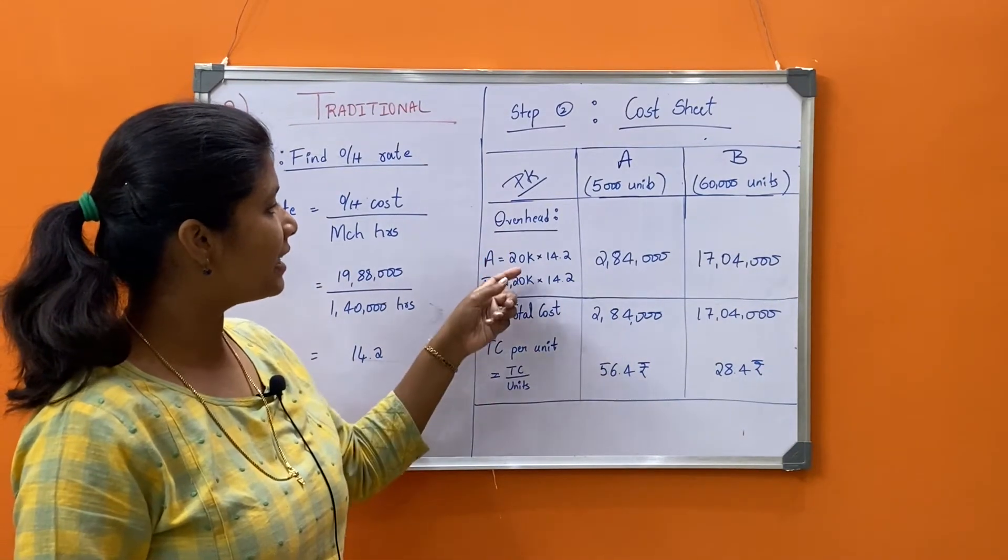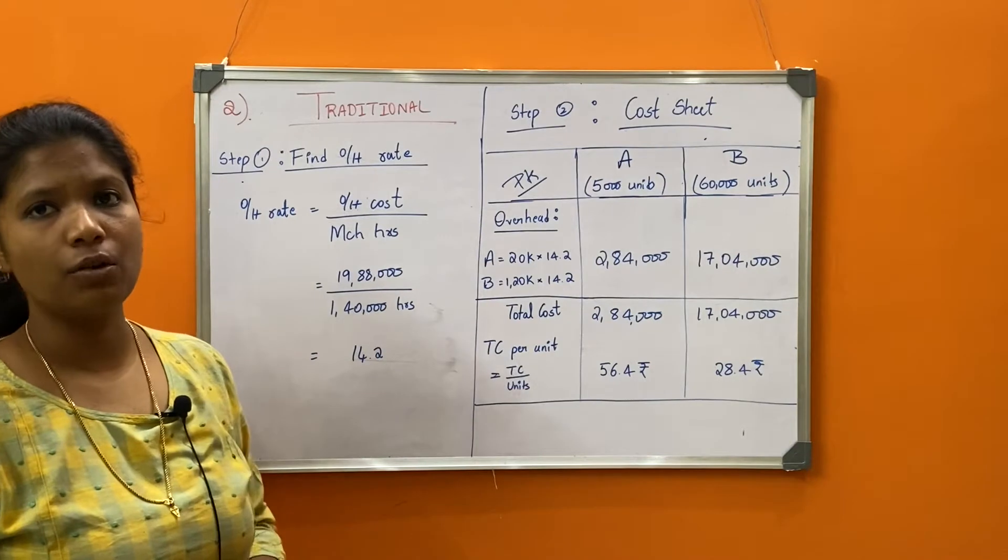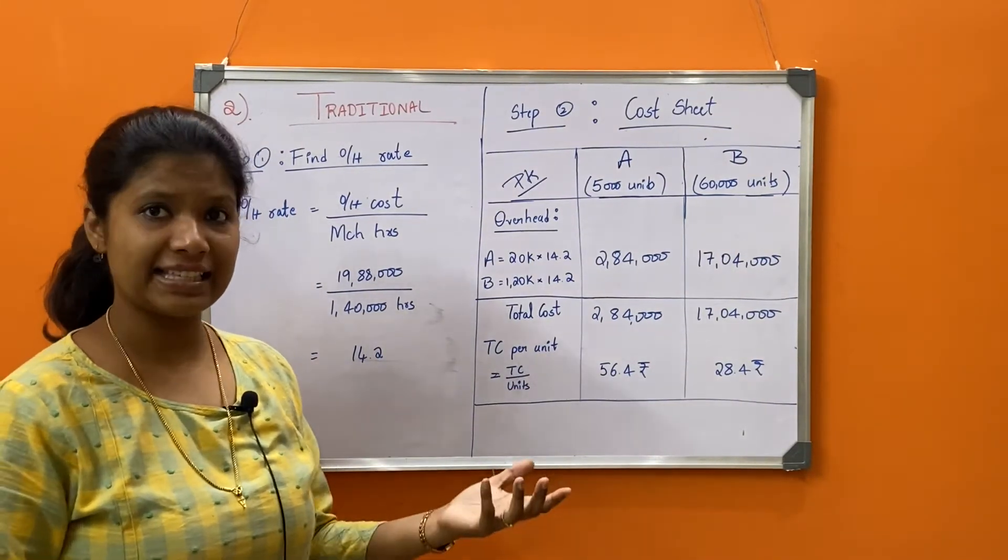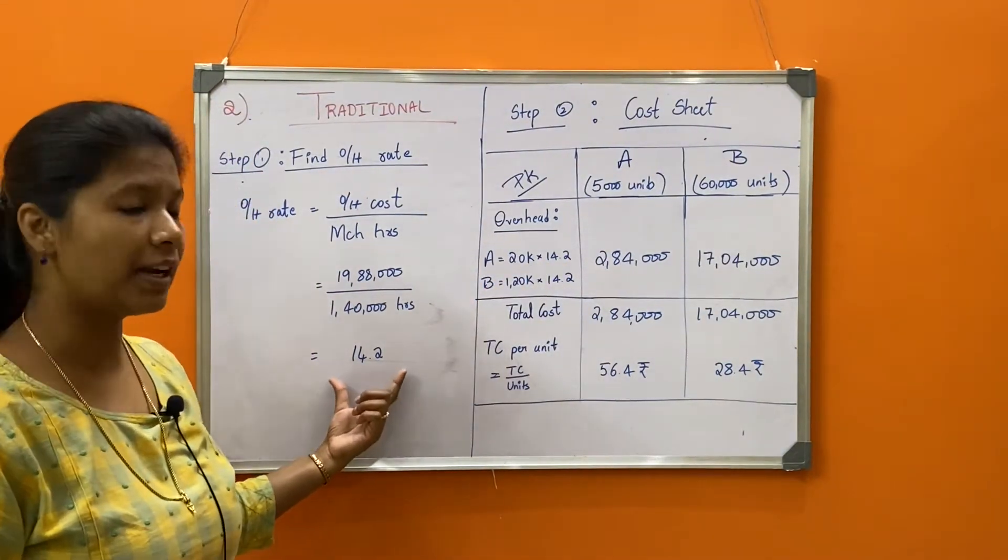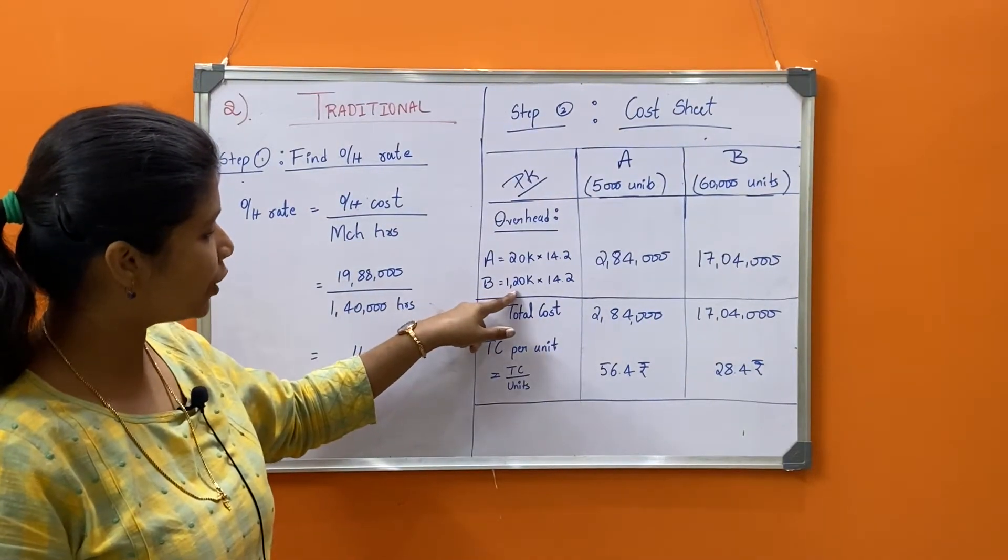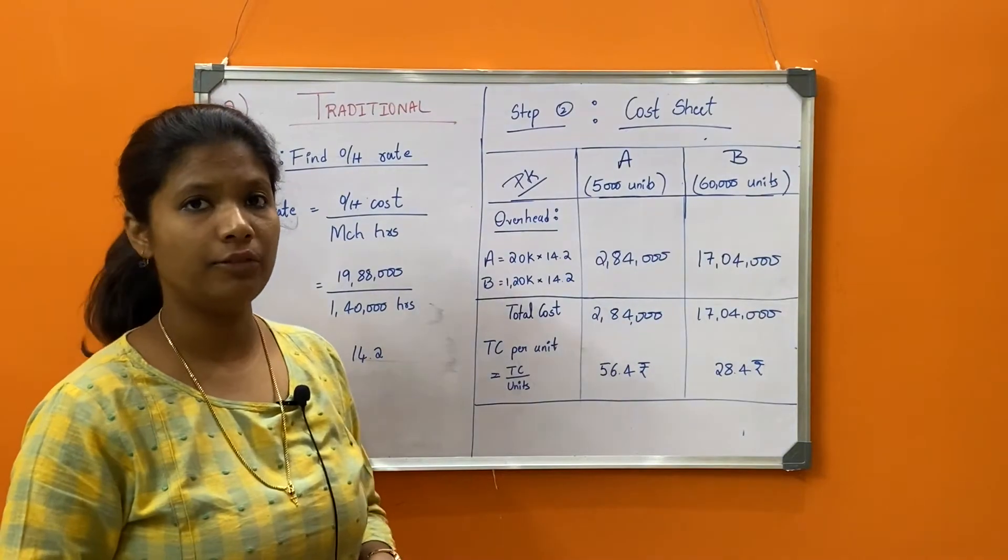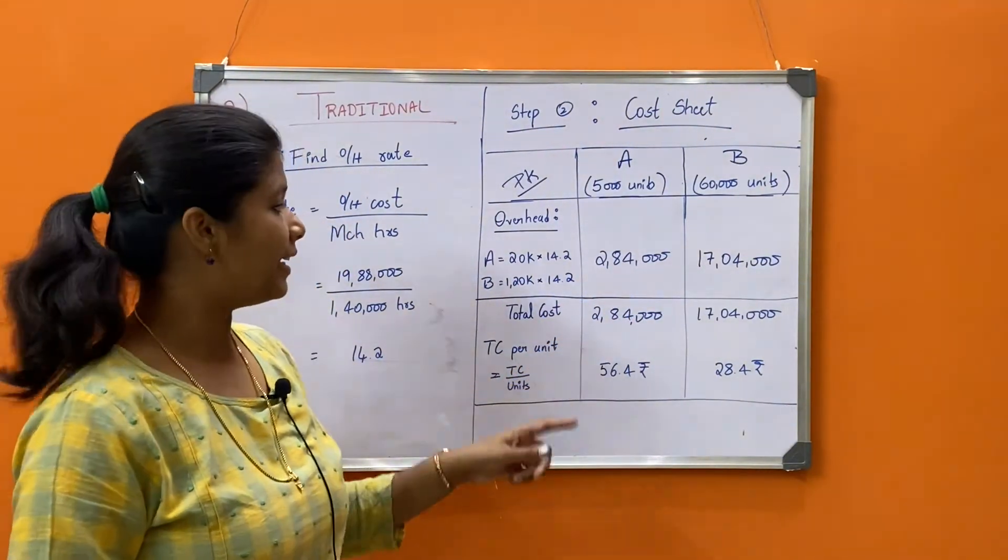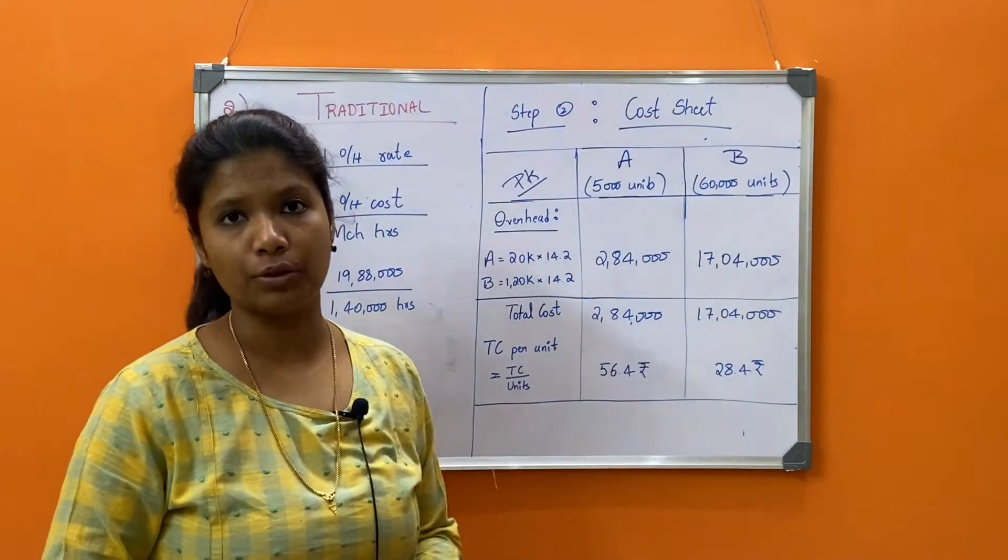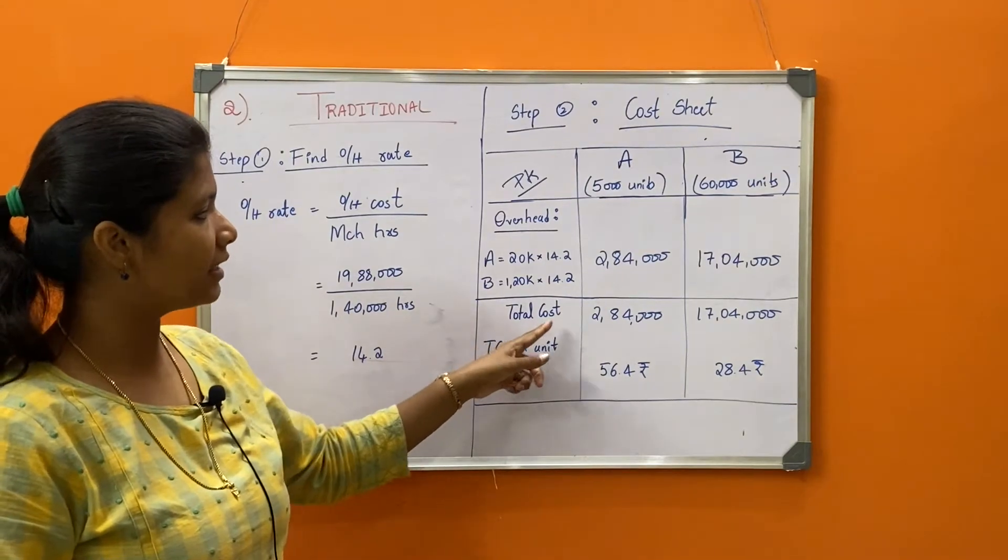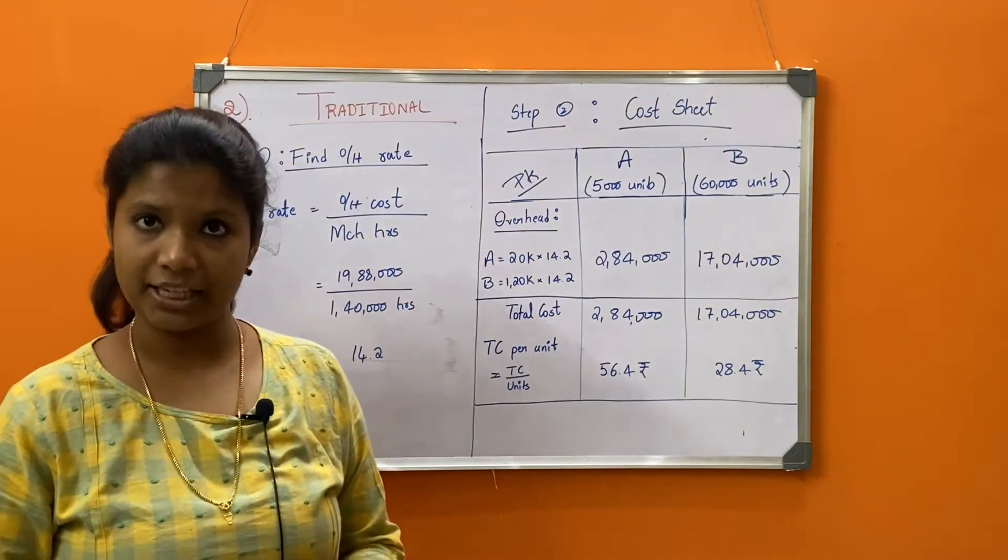Overhead for product A is 20,000 into 14.2. This 20,000 is the number of machine hours that A has taken, and 1,20,000 is the number of machine hours product B has taken. So 20,000 multiplied by the overhead rate we found in step one. When you put this together, 1,20,000 plus 20,000 gives you the total machine hours. 20,000 into 14.2 arrives at 2,84,000, and for product B, 1,20,000 hours into overhead rate of 14.2 gives 17,04,000 rupees.